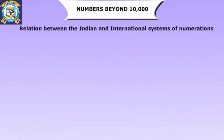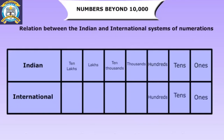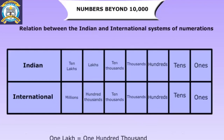Relation between the Indian and international systems of numeration. Indian system: ones, tens, hundreds, thousands, ten thousands, lakhs, ten lakhs. International system: ones, tens, hundreds, thousands, ten thousands, hundred thousands, millions. One lakh is equal to one hundred thousand. Ten lakhs is equal to one million.